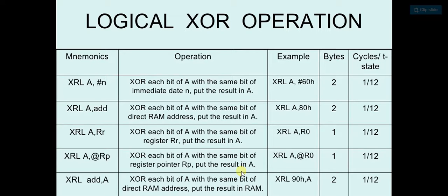See the example XRL A, 60H. It will do the simple XOR operation of the data provided by A and the data provided by us as the immediate data.